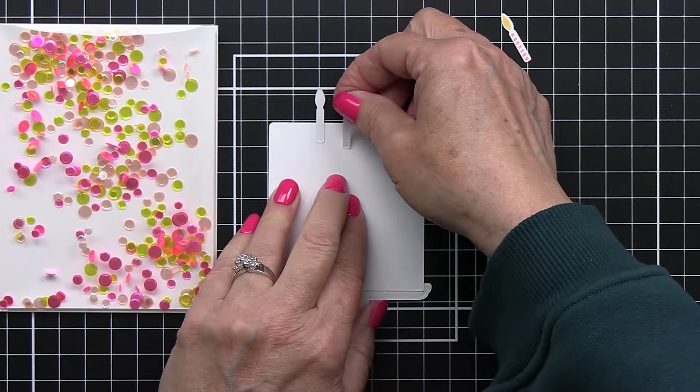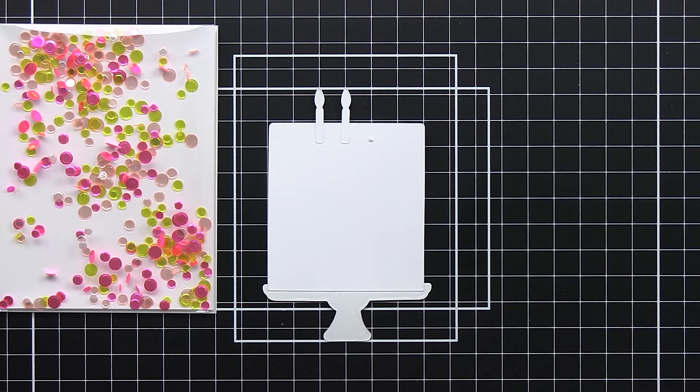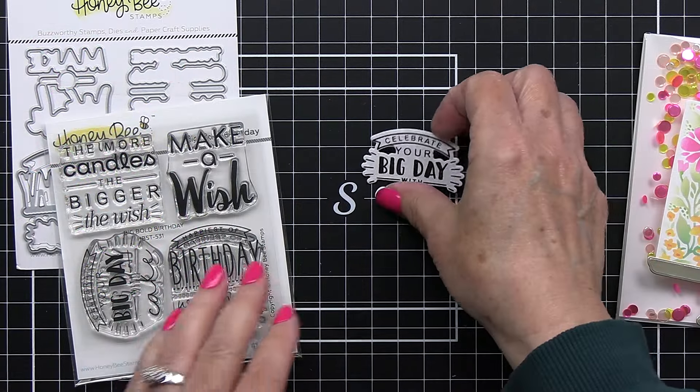So I'm going to just add my three little candles here and I didn't want to add them too high because I do want to make sure that this is going to fit onto my card front nicely. So I'll just add this last little candle on here again just with that little bit of liquid adhesive.